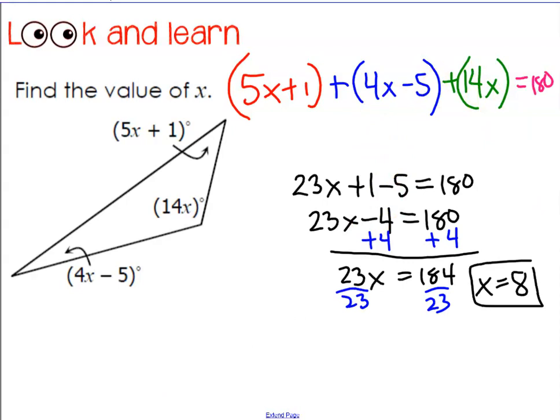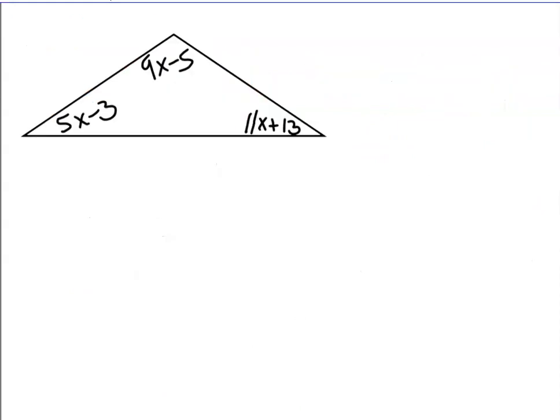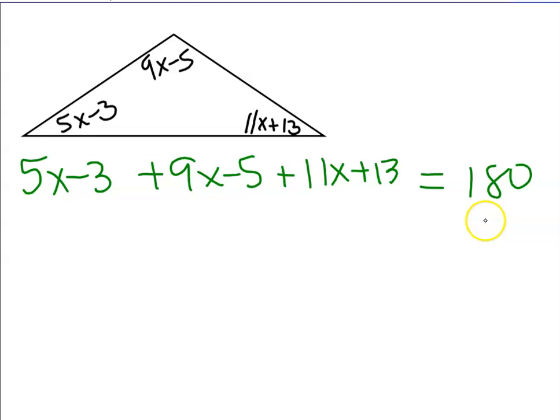Alright. Now that you've had a chance to look at an example, let's start one problem together. Look at all three measurements and write your algebraic equation. Angle 1 plus angle 2 plus angle 3 all equals 180 degrees.